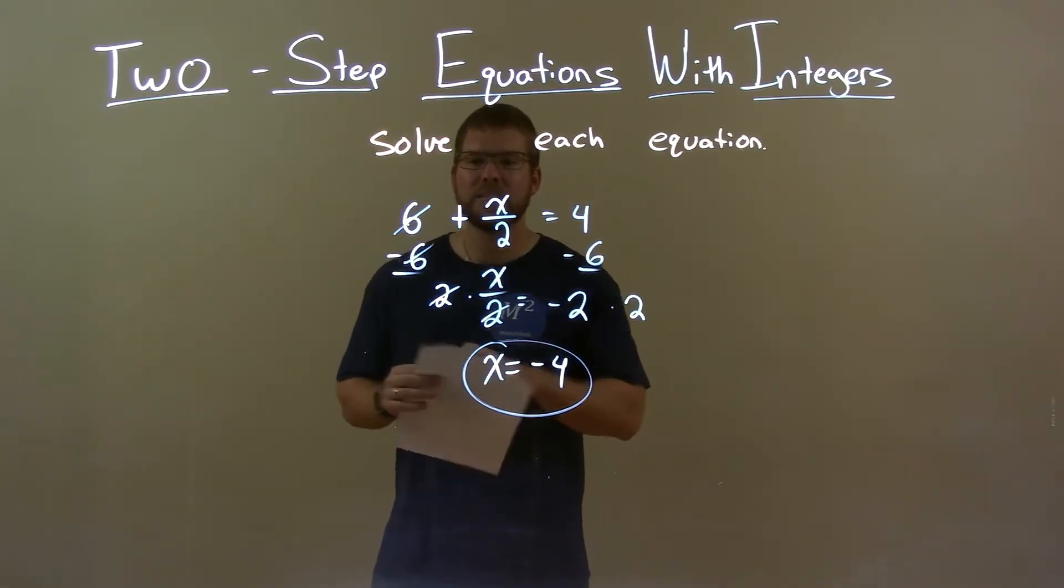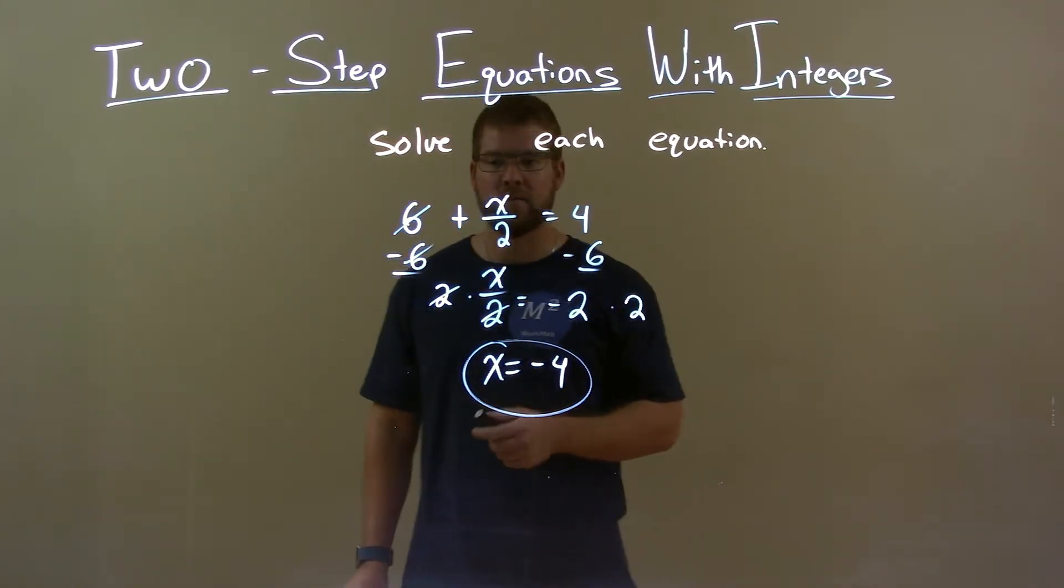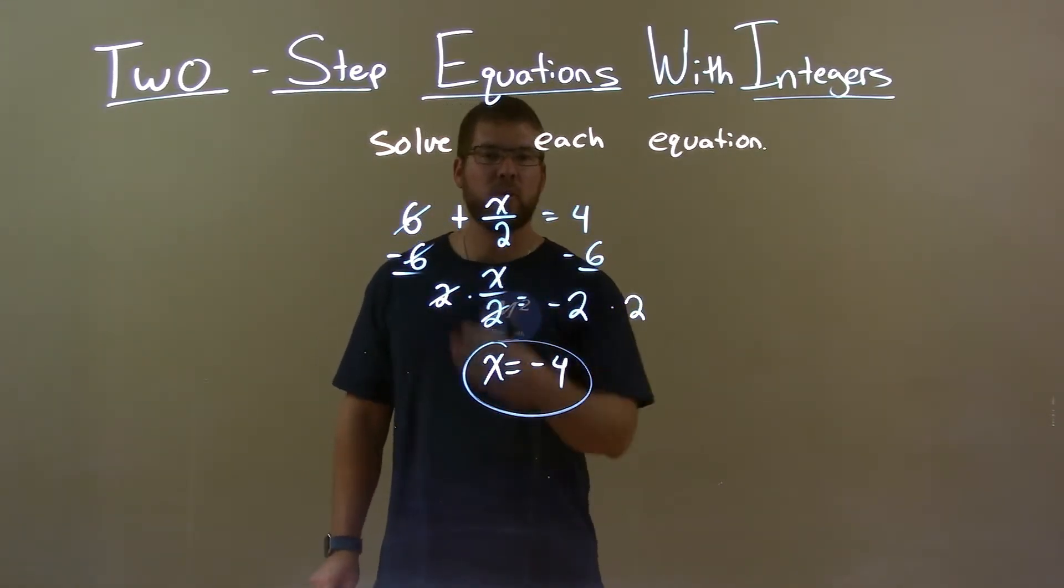Quick recap: we're given 6 plus x over 2 equals 4, and we can solve for x. Subtract 6 from both sides, then multiply both sides by 2. There we have our final answer, x equals negative 4.